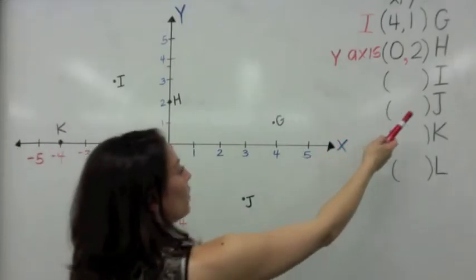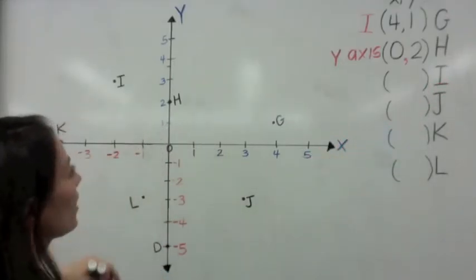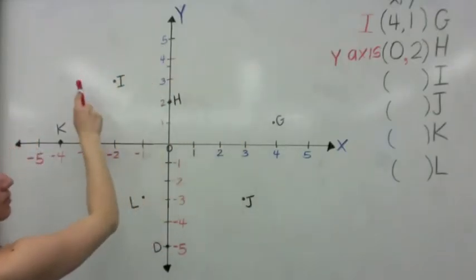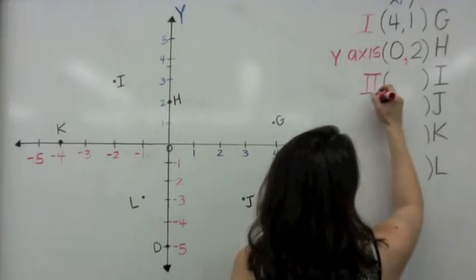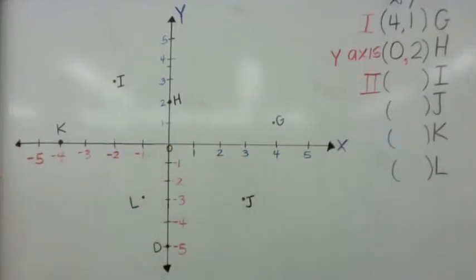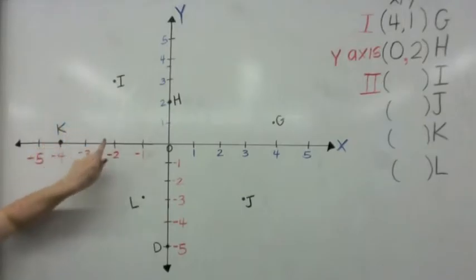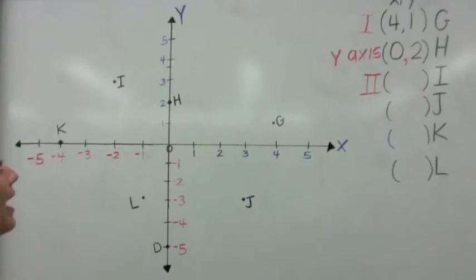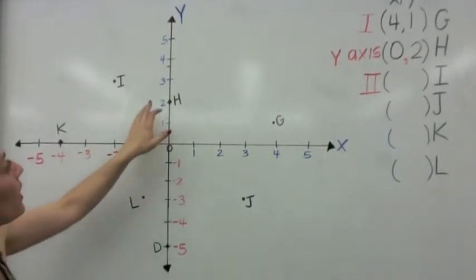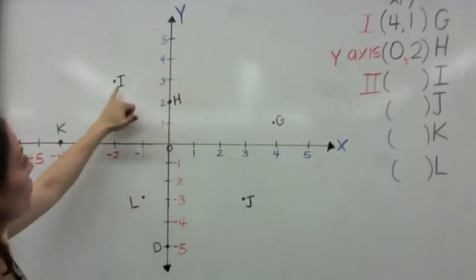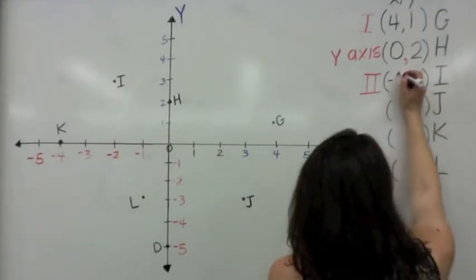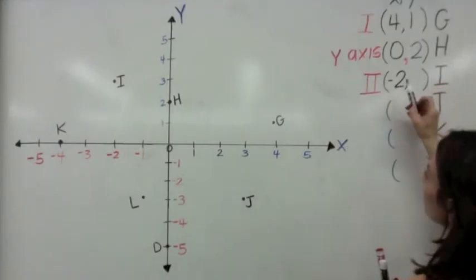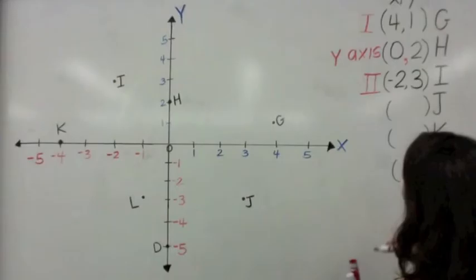Next is I. Which quadrant is it in? It is quadrant 2. So we start where x is negative 2. How many did we go up on the y-axis? Looks like we went up to 3. So in quadrant 2, it starts with a negative x, then goes up to a positive y. The ordered pair is (negative 2, 3).